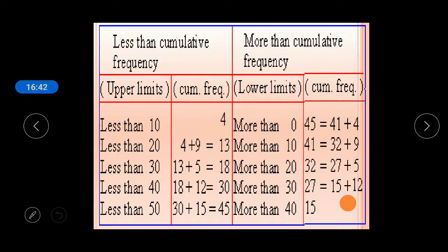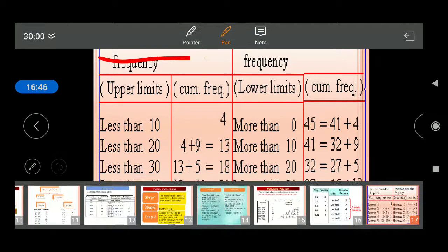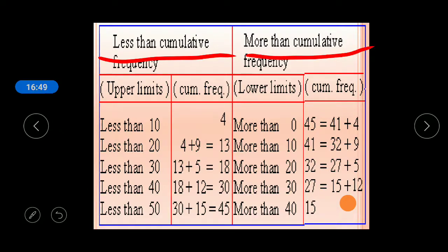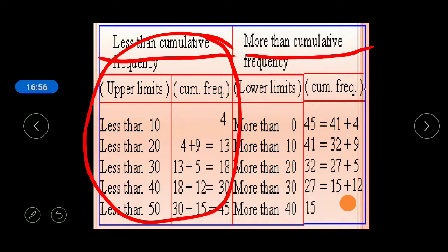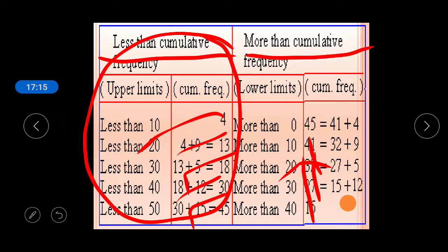In general there are two types of cumulative frequency: less than cumulative frequency and more than cumulative frequency. In ninth class, cumulative frequency means less than cumulative frequency — you add from the top. More than cumulative frequency is added in reverse from the bottom, and it tells how many observations are above the lower limit of a class. By this, you have learned about tabular representation of data.